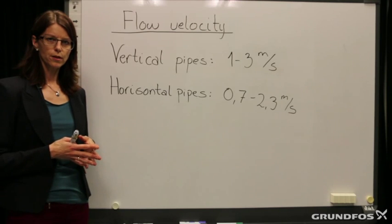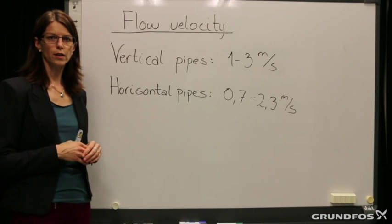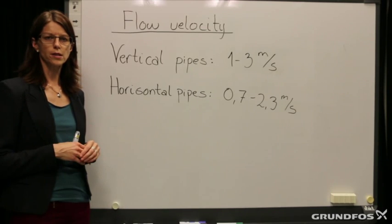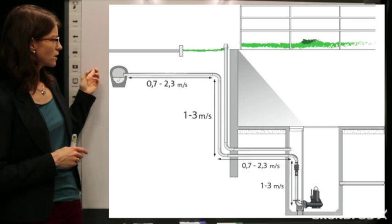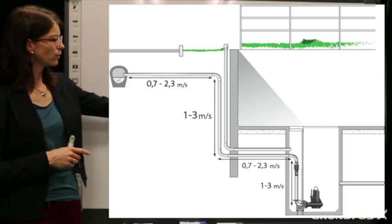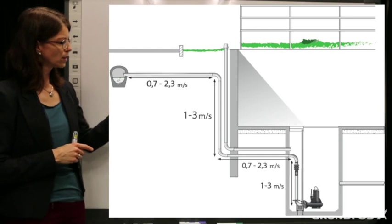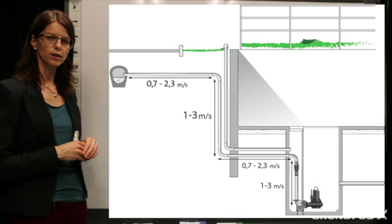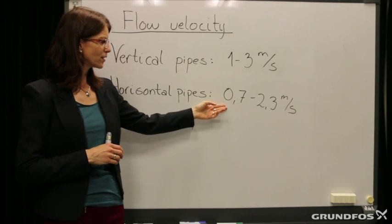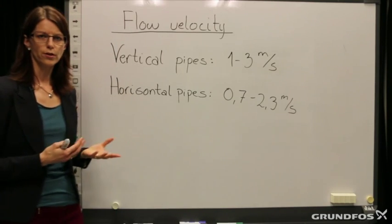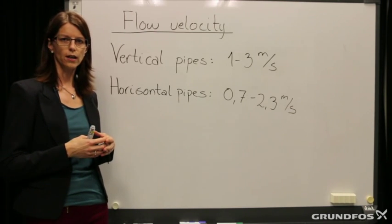When we talk about the pipes and the dynamic head, we also need to talk about the flow velocity. It is a very important factor when dimensioning the pipe system for a wastewater installation. The recommended velocity for vertical pipes in the pit is 1 to 3 meters per second, and for horizontal pipes in the ground, 0.7 to 2.3 meters per second. The reason why 0.7 meters per second is recommended is to avoid sedimentation — solids staying in the pipes that can cause clogging.